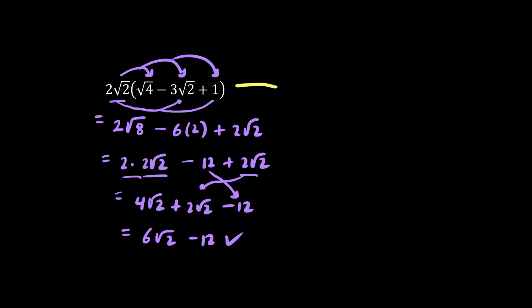Now let's try the problem one more time. We have 2 root 2, but this time let's clean up the inside of the bracket. Root 4 is actually 2, so we have 2 minus 3 root 2 plus 1. We're allowed to work on the inside first. What's 2 plus 1? We have 3 minus 3 root 2.